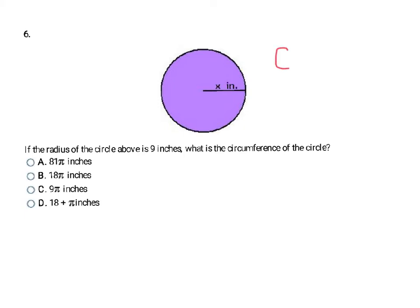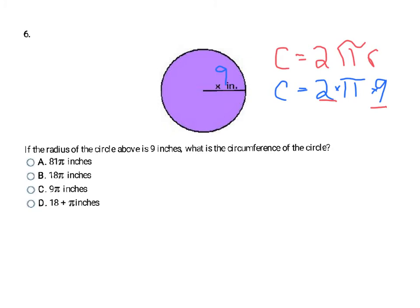Next is a circle. The circumference formula is C equals 2 times pi times R. Sometimes we use pi approximately as 3.14, and sometimes we carry the pi symbol. Since pi appears in all the answer choices, we carry the symbol. R stands for the radius — the distance from the center to the edge. The radius here is 9, so: 2 times pi times 9. Multiplying 2 times 9 gives 18, so the circumference is 18π inches.